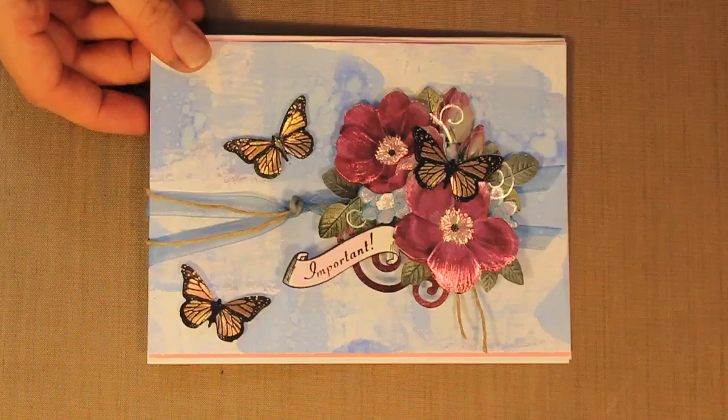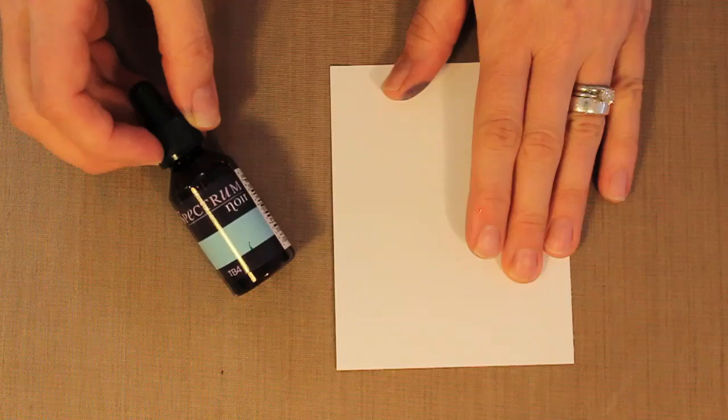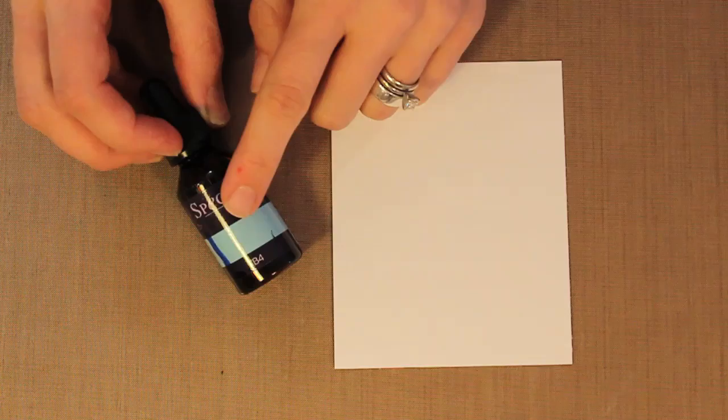First I need a piece of cardstock and I'm working with the Neenah Classic Crest cardstock and this is from Crafter's Companion as are the alcohol inks that I'm using. And this is the Spectrum Noir line. The Classic Crest is designed to work with the Spectrum Noir pens and alcohol ink refills. So I've got a piece of the cardstock and I'm working with TB4, a really pretty soft blue.